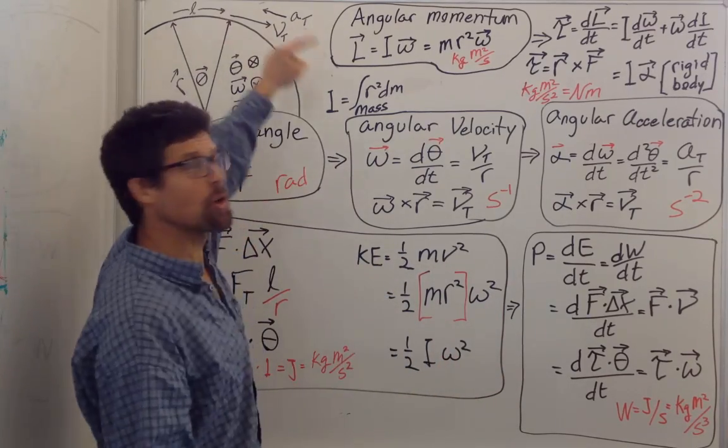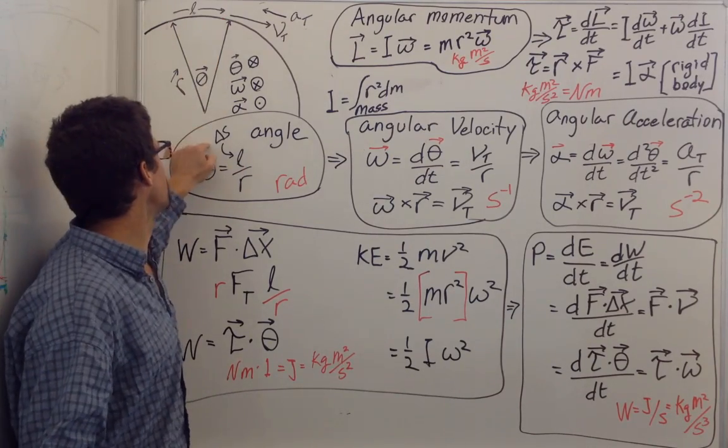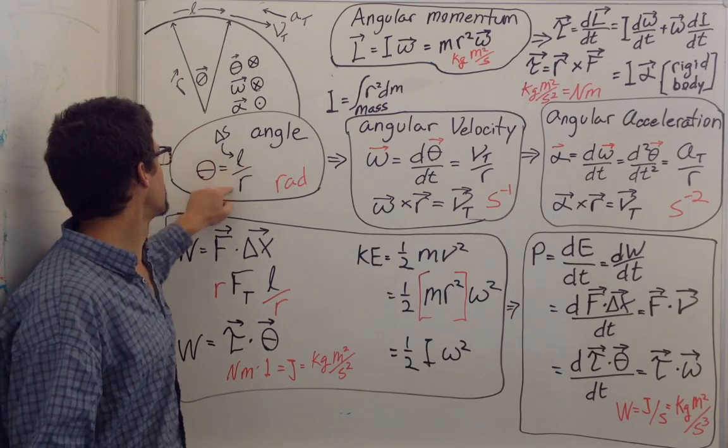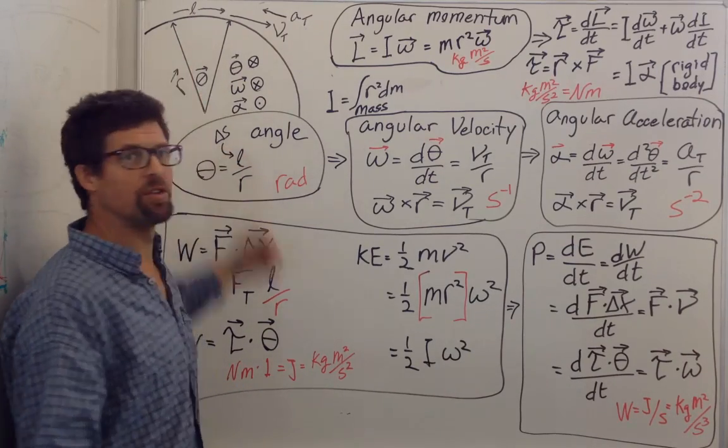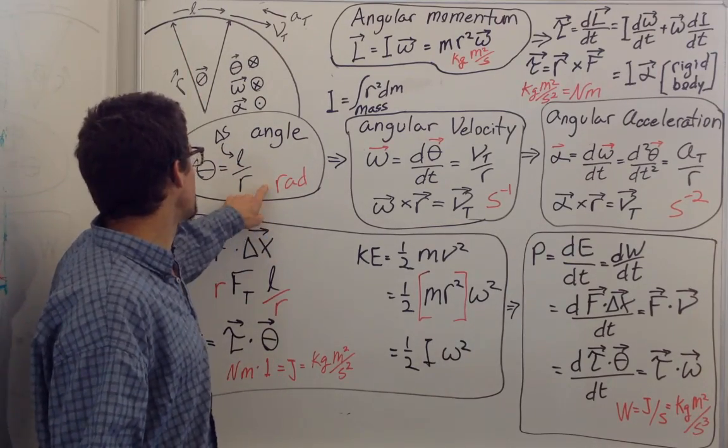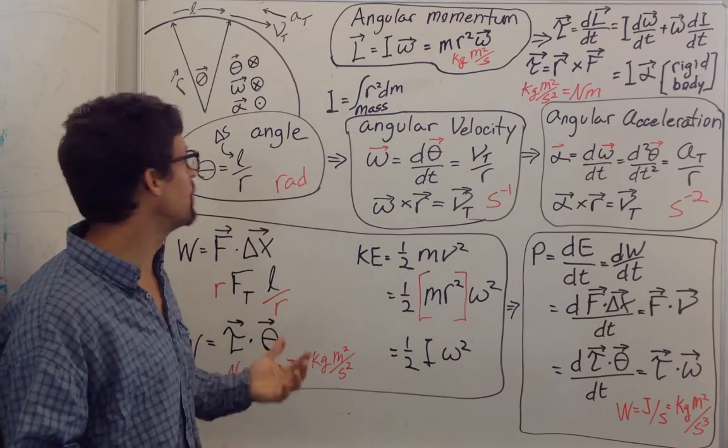Now I'm going to do the same for rotational mechanics. If you take a circle with a radius, we define theta as the ratio of the arc length, double s in your book, divided by the radius. All the way around is 2π. Its units are radians, but you can leave it as unitless because meters over meters has no units.